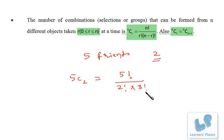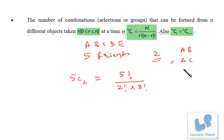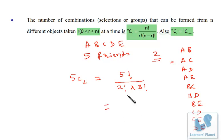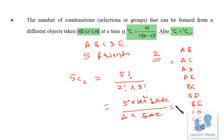This is 5 factorial by 2 factorial into 3 factorial. Generally, if we are listing combinations — suppose five friends are A, B, C, D, E — as we have done in previous examples, we get ten combinations: AB, AC, AD, AE, BC, BD, BE, CD, CE, and DE. So in all, ten combinations are there. Solving it: 5 factorial is 5×4×3×2, divided by 2 factorial (which is 2) and 3 factorial (which is 3×2), giving us ten combinations.